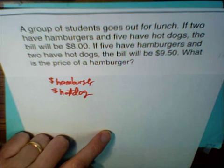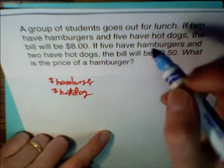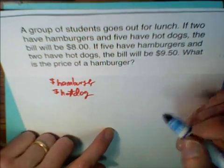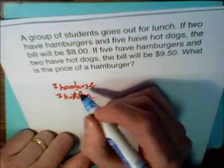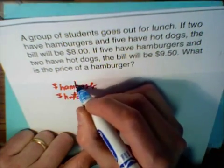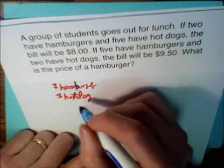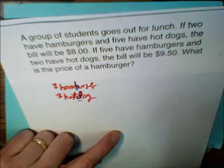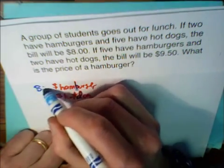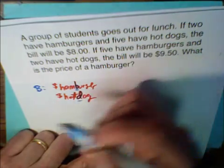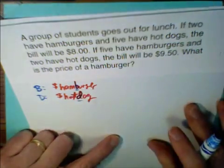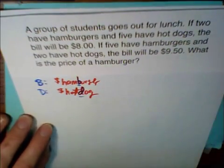Be careful with this. Step two is to pick variables. Hamburger and hot dog both start with the letter H, so what if we say B for burger and D for dog? B will be the price of a hamburger. D will be the price of a hot dog.